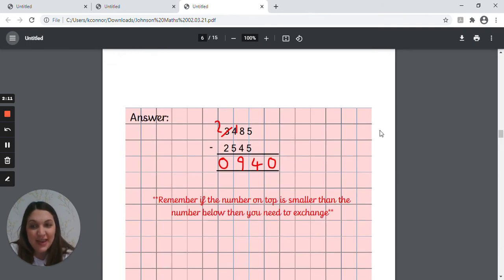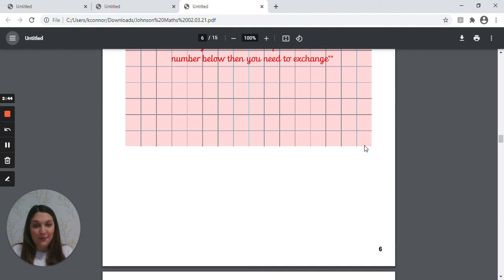Okay, so the answer is on screen for you here. So five take away five, you should have started off with that one and that would leave you with zero. Eight take away four would leave you with four. Four take away five you can't do it because four is smaller than five, so you would have had to look to the thousands column and you can see there we've crossed out the three, replaced it with two, and carried that thousand over to the hundreds column, making that into fourteen take away five, which left us with nine. And then two take away two left us with zero, so hopefully you've got 940 for that one.